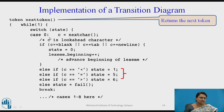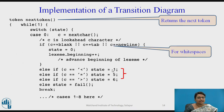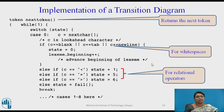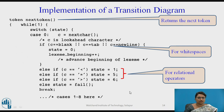Otherwise, if less-than is encountered, it goes to state 1. If greater-than is encountered, it goes to state 6. Like this, all relational operators are handled. If none match, it calls fail, which moves to the next transition diagram. States 1 through 8 are implemented for all the relational operators.